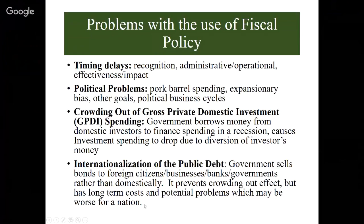The two more severe problems are crowding out of gross private domestic investment and issues with foreign borrowing. When the government sells bonds, it is borrowing money from financial investors. If the government borrows domestically by selling bonds to American people and businesses, gross private domestic investment spending ends up dropping — crowded out as a result. Other times, to avoid crowding out, the government sells bonds to foreign entities — foreign people, businesses, banks, and governments — but that creates a whole bunch of other problems.